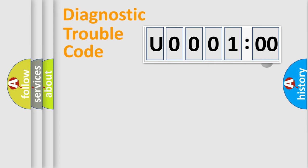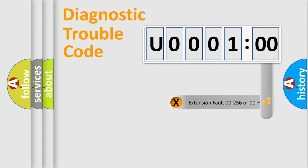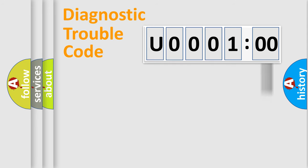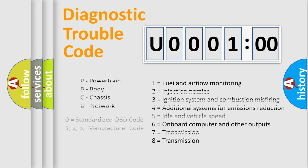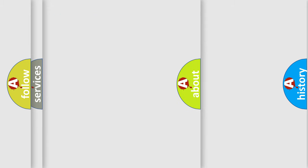The add-on to the error code serves to specify the status in more detail — for example, a short to ground. This division is valid only if the second character code is expressed by the number zero.